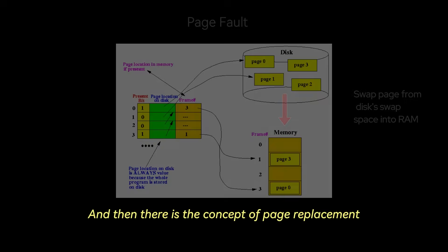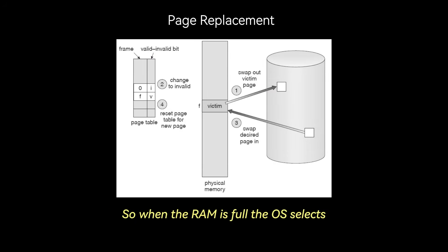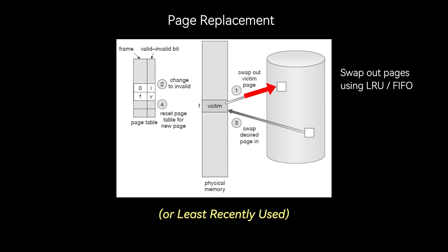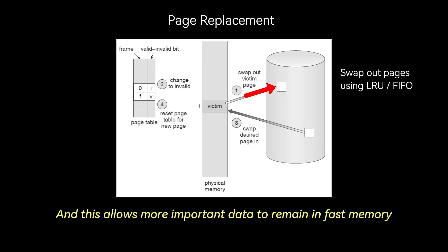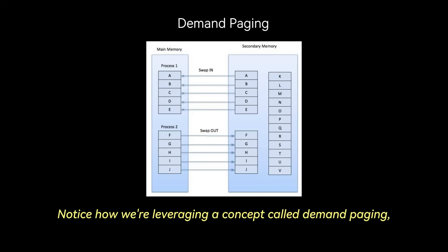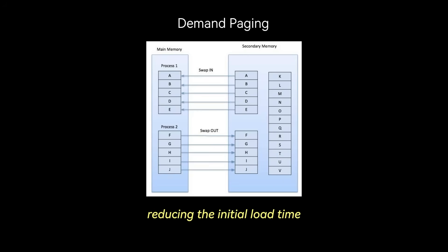There is also the concept of page replacement. When the RAM is full, the OS selects less frequently used pages to be moved back to disk using algorithms like LRU (least recently used) or FIFO (first in, first out), allowing more important data to remain in fast memory. Notice how this leverages demand paging, where pages are loaded into RAM only when needed, reducing the initial load time.